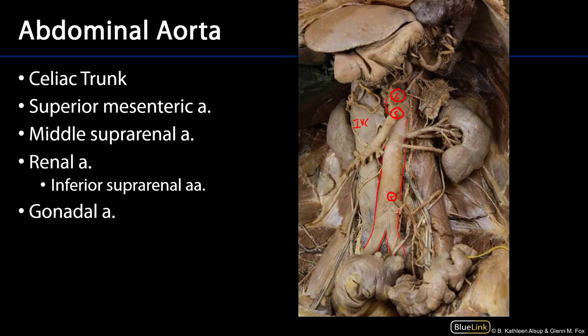We can also see some of the lateral branches of the abdominal aorta. Here is the inferior phrenic artery, and you can see it giving off the superior suprarenal arteries. There's also the middle suprarenal artery. Coming more distally off the abdominal aorta we can see the renal artery, which gives rise to the inferior suprarenal arteries.